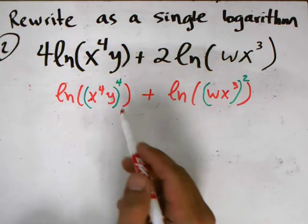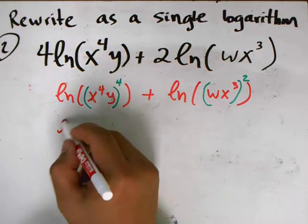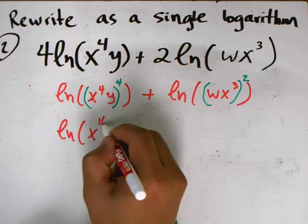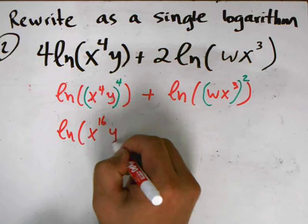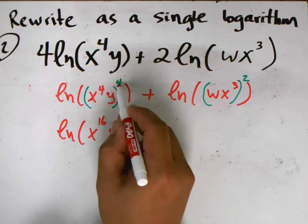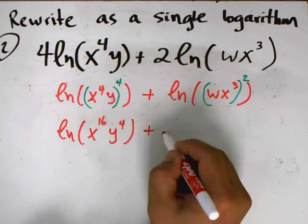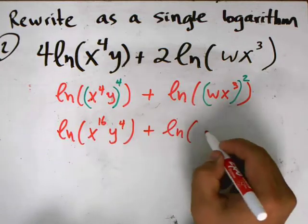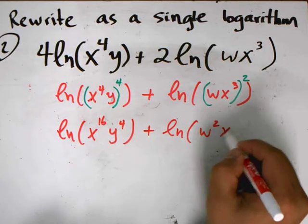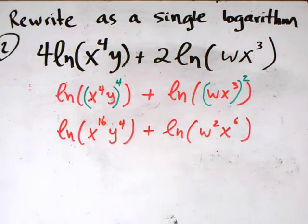Now it's just a matter of using laws of exponents. This becomes the natural log of x to the 16th, y to the 4th — multiplying the exponents: 4 times 4 and 4 times 1 — plus the natural log of w squared, x to the 6th.